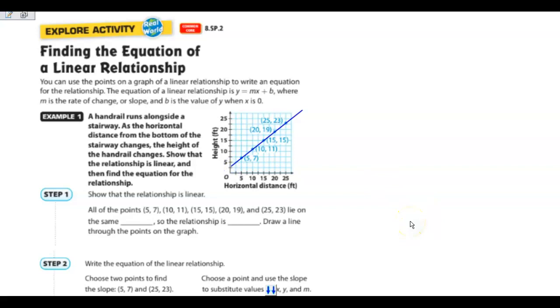All right, so all these points are on the same line. So what's that telling me is that it is linear. One thing we also notice is it does not go through 0, so it's non-proportional.